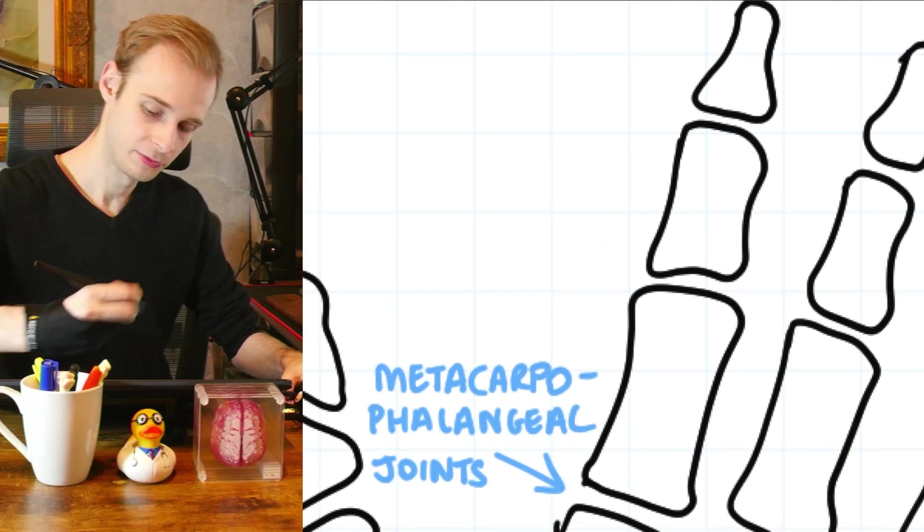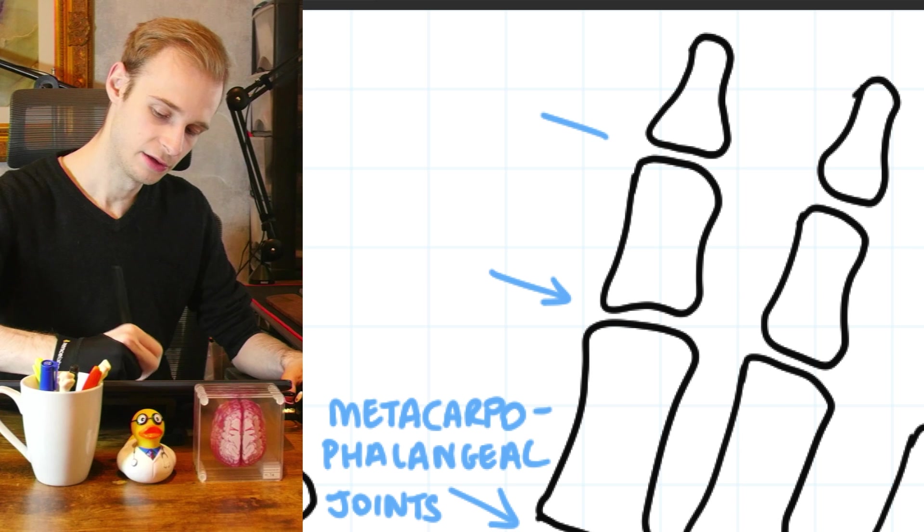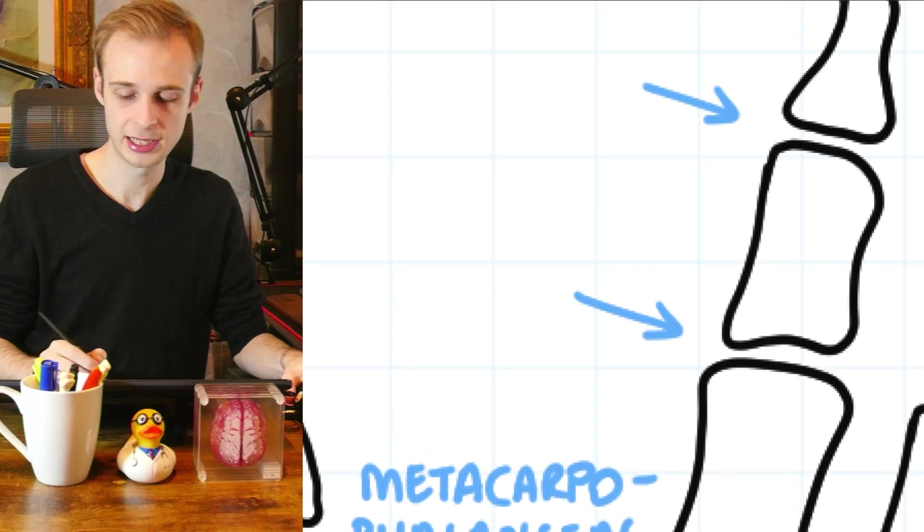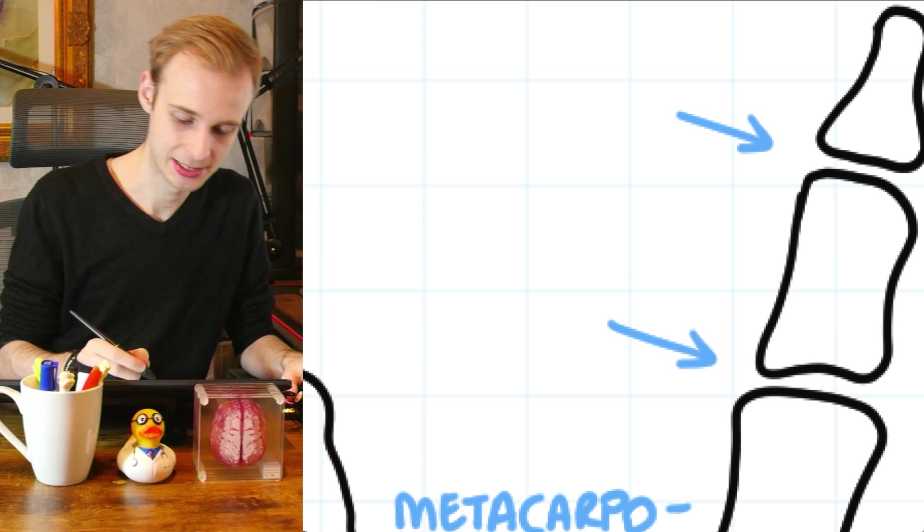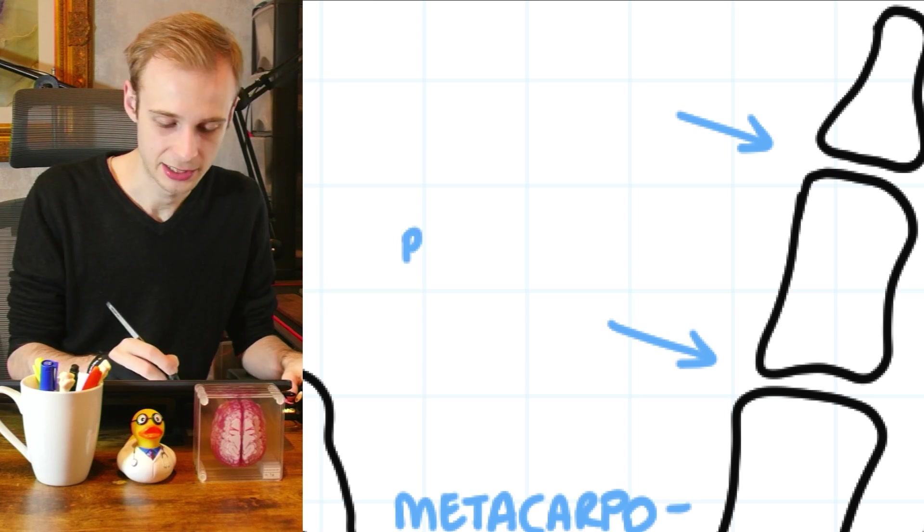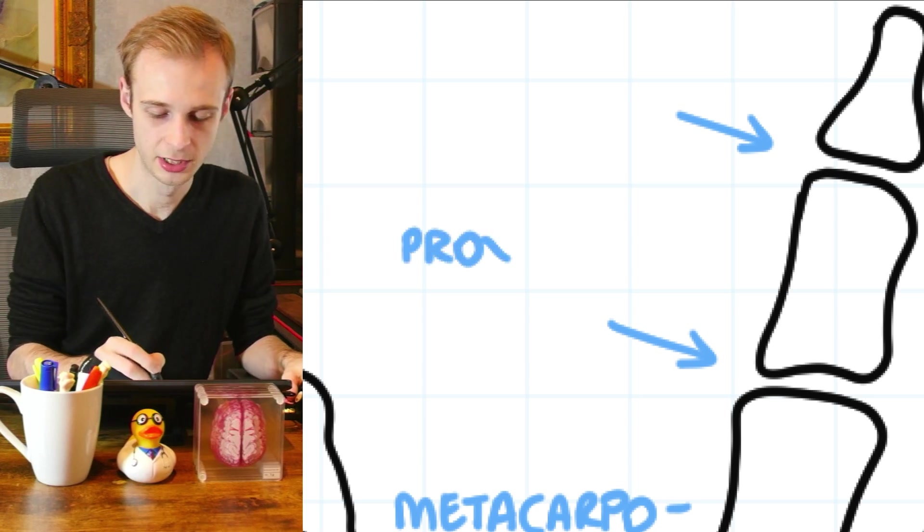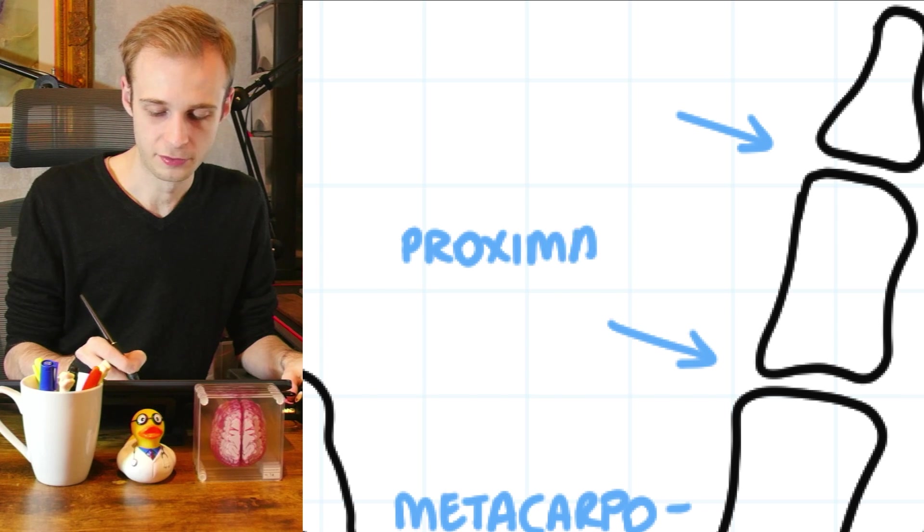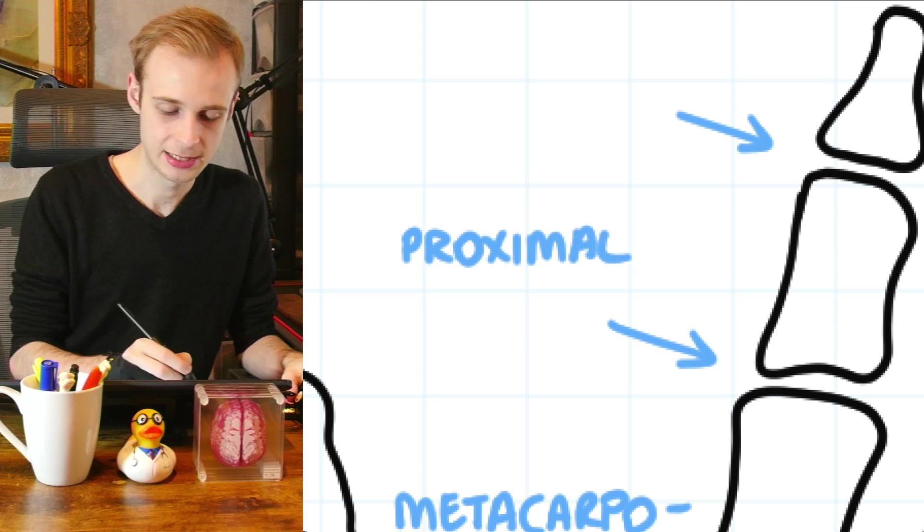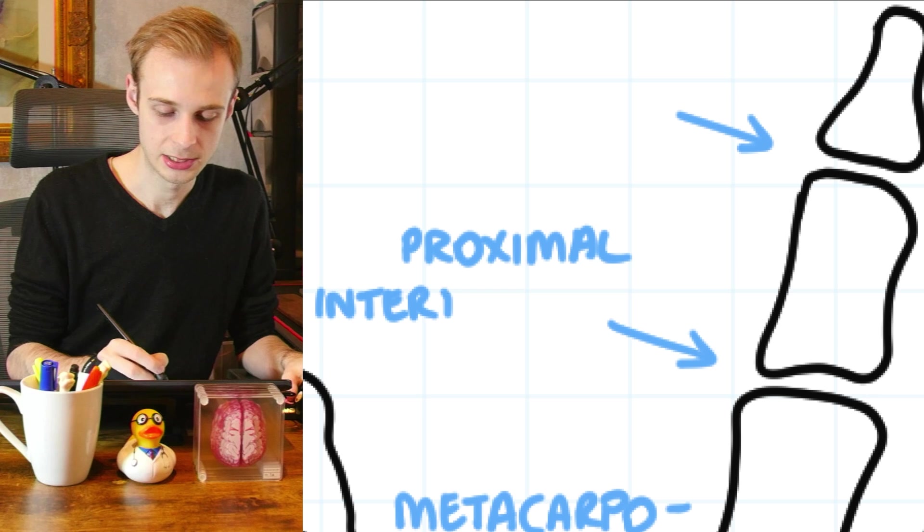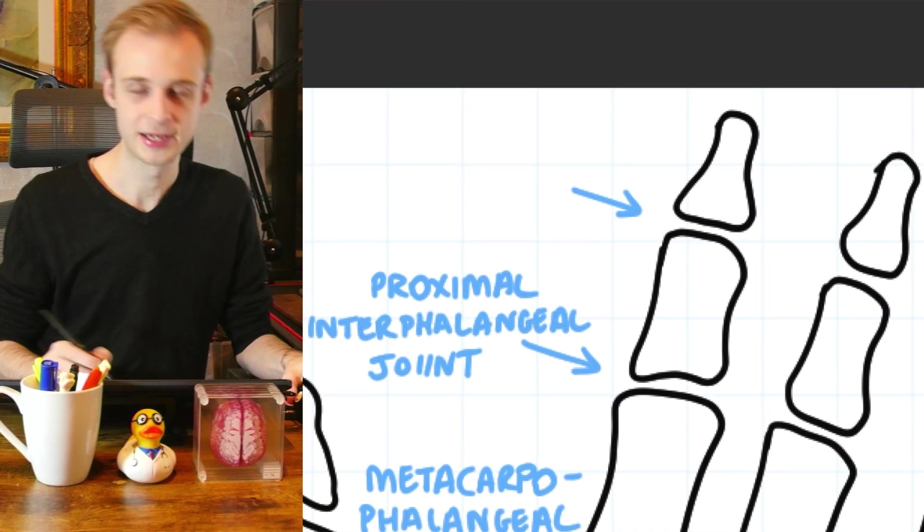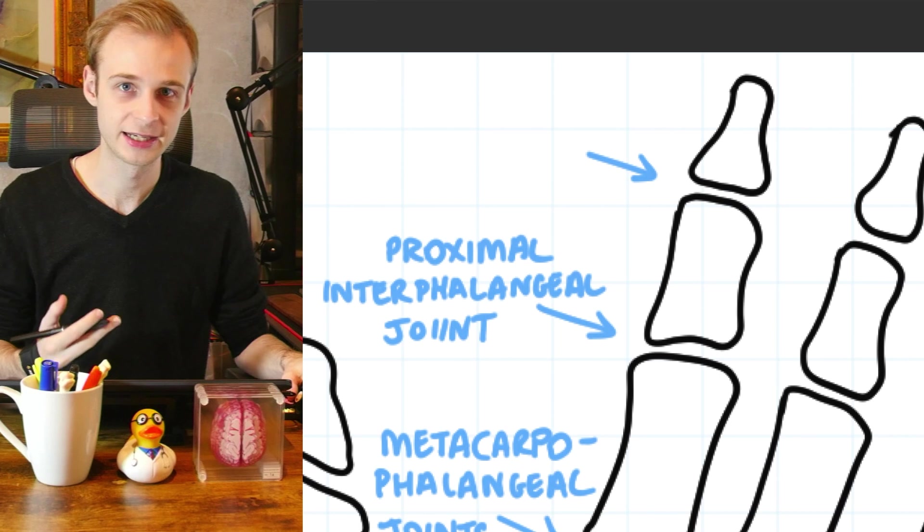Then moving up, we have two more joints in the phalanges, one here and one here. And the naming that we're going to use is just as simple. You can abbreviate if you like, just for the purposes of this video, I'll write it in full. But this first one here is the proximal interphalangeal joint. This makes sense, right? It's within the phalanges. So it's an interphalangeal joint and it's the most proximal one.